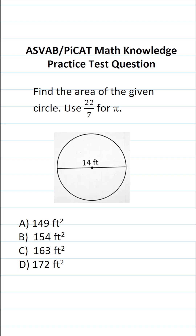This math knowledge practice test question for the ASVAB and PyCat says find the area of the given circle. Use 22 over 7 for pi. You're not given a reference sheet or a calculator on the ASVAB, so you do have to commit some of these very basic formulas to memory.